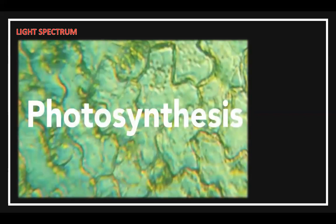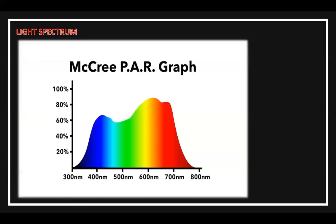What do plants do after they capture this light? That brings us to P — Photosynthesis. This is the McCree Power Graph. It doesn't show absorbance; instead, it shows the rate of photosynthesis by color. As you can see, when we measure photosynthesis, plants use the full spectrum of light from 400 to 700 nanometers.